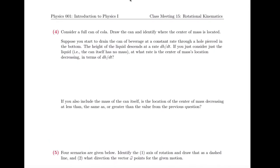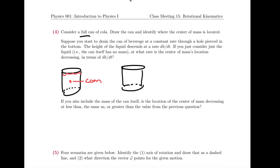Consider a can of cola — draw and identify where the center of mass is located. It's a full can, filled to the brim, so the center of mass by symmetry is right at the center of the can — the balancing point where if you took the average of all the mass, that's where it's located. Suppose you start to drain the can and the height descends at a constant rate. If we're only considering the liquid inside the can, how is the center of mass changing?